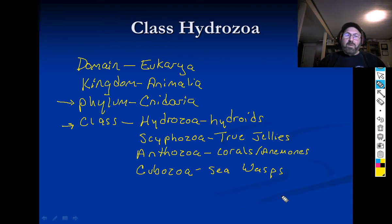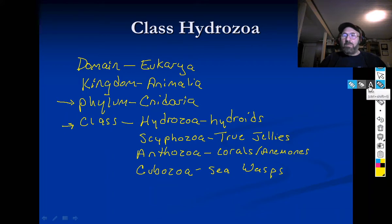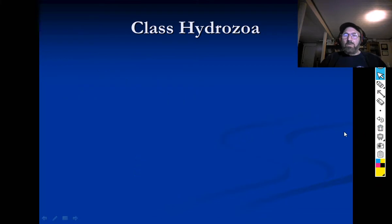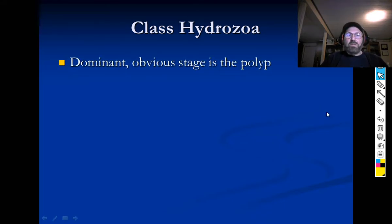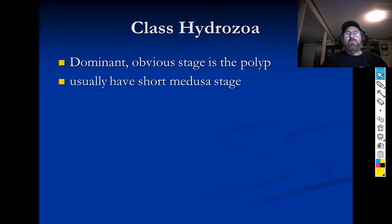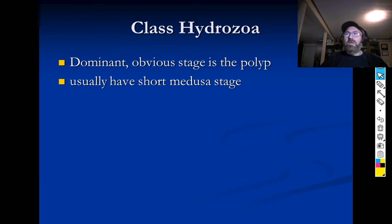The Cubozoa are the sea wasps — really interesting and kind of scary because they can kill you in under two minutes, which is amazing especially given how small some of them are. For Hydrozoa, the dominant obvious stage is the polyp. They do usually have a medusa stage but it's tiny and pretty brief.